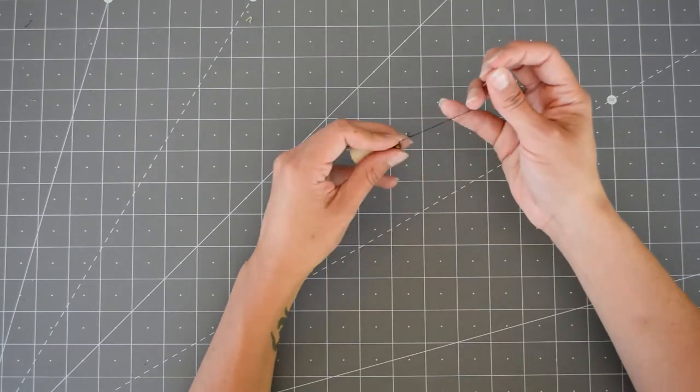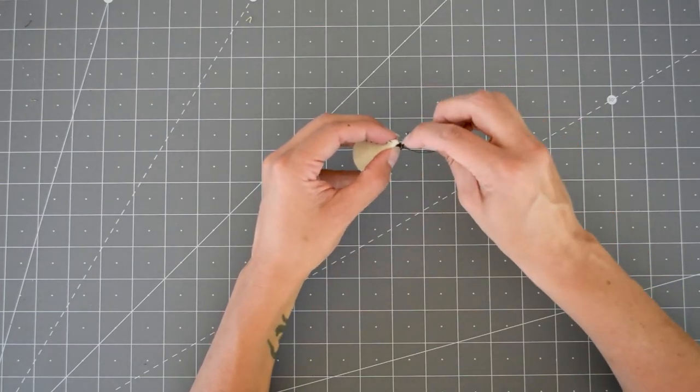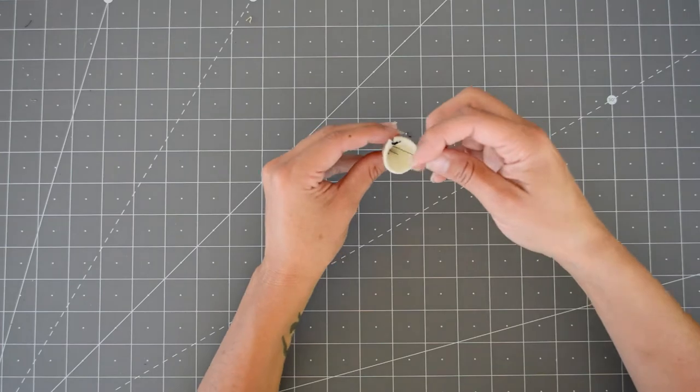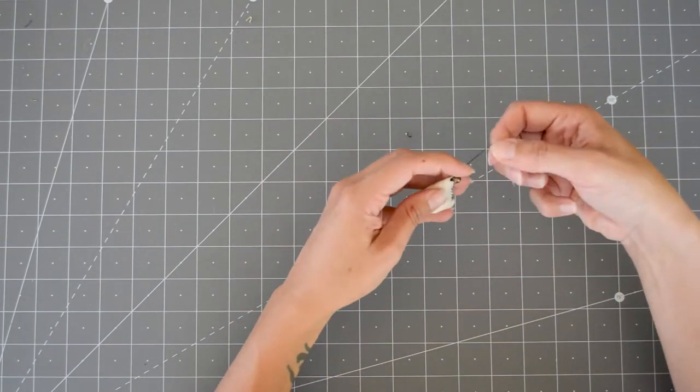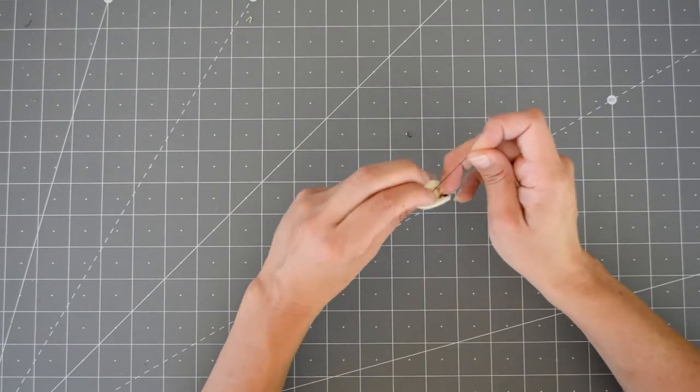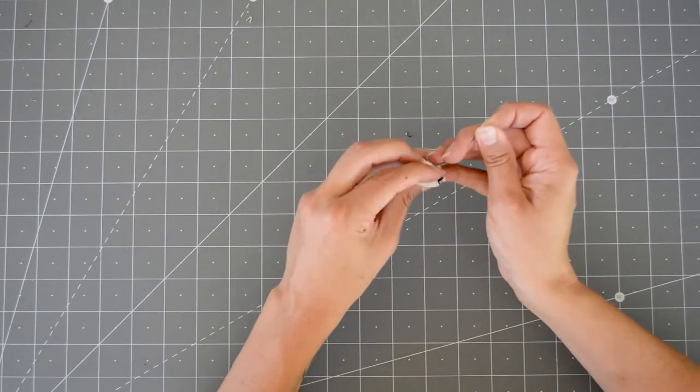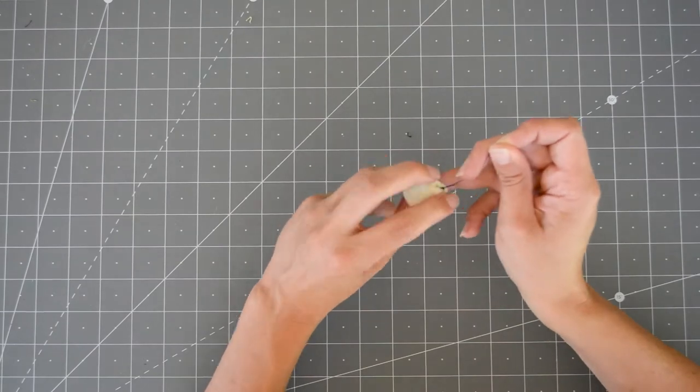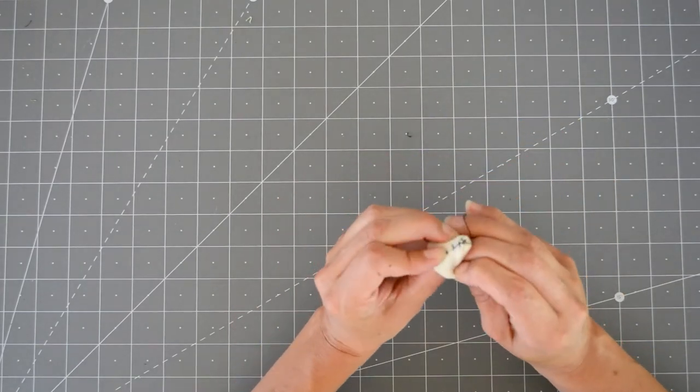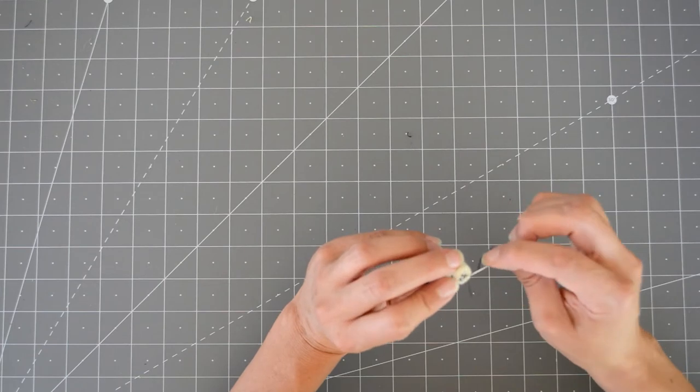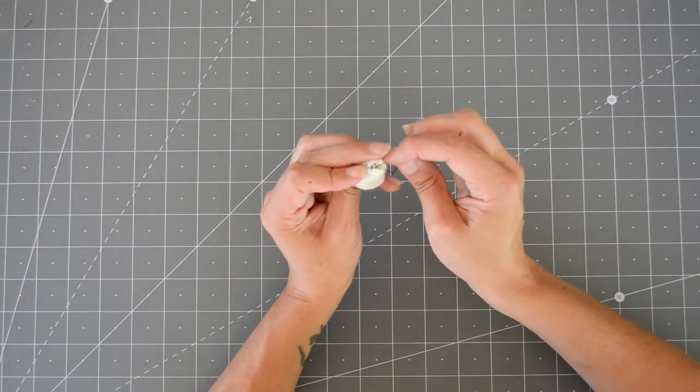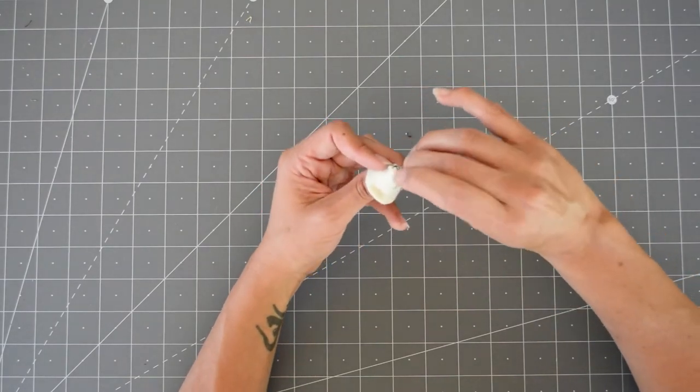And then we're just going to stitch it a couple times in here. We're going to tie this off too. So one of the easiest ways that I found, especially when I'm short on thread like this, is to kind of turn it inside out and then make a knot in here, the top of the cap.